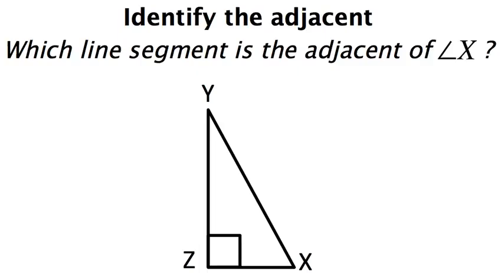This question is asking us which line segment is adjacent to angle X. So here's point X right there. This is angle X, and I can see that angle X is made up of two lines.